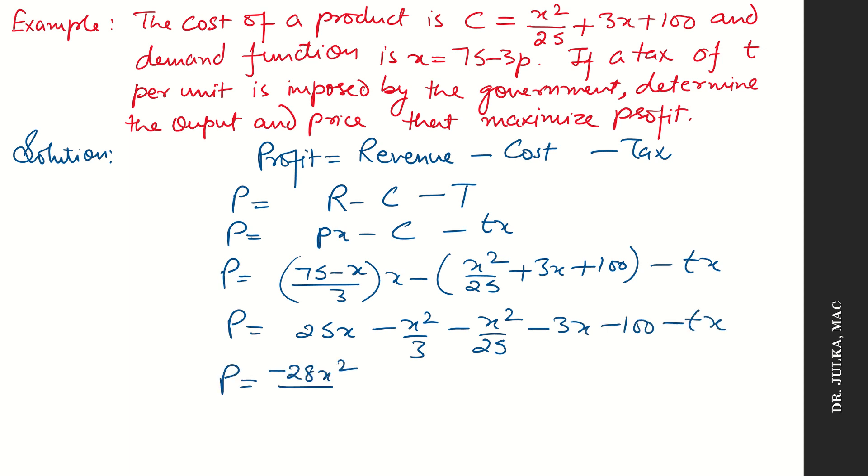Profit equals to minus 28x squared by 75 plus 22x minus tx minus 100. Now differentiate with respect to x. First derivative equals to minus 56x upon 75 plus 22 minus t. Put first derivative equal to 0 in order to find maximum or minimum points. When we put first derivative equal to 0, we'll get the value of x equals to (22 minus t) multiplied by 75 whole divided by 56.